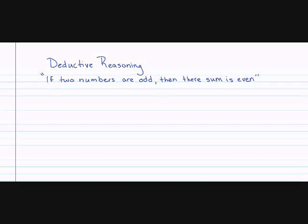Let's go ahead and take a look at deductive reasoning. Deductive reasoning is the process of using facts, rules, definitions, or properties to reach a valid conclusion. Suppose you have a true conditional statement and you know that the hypothesis is true when you give an example. Deductive reasoning allows you to say that the conclusion is true for that case. It's your job to prove if that conditional statement is true or not, using facts.